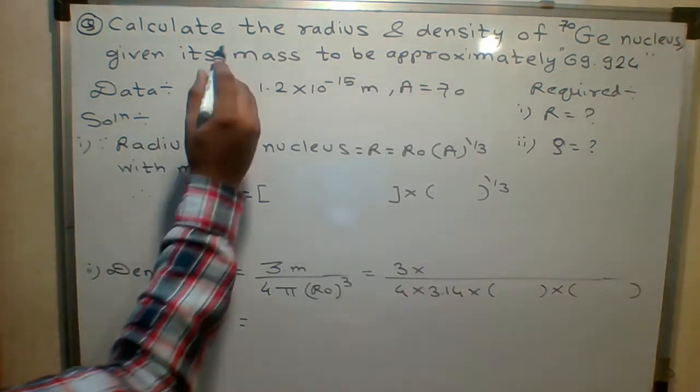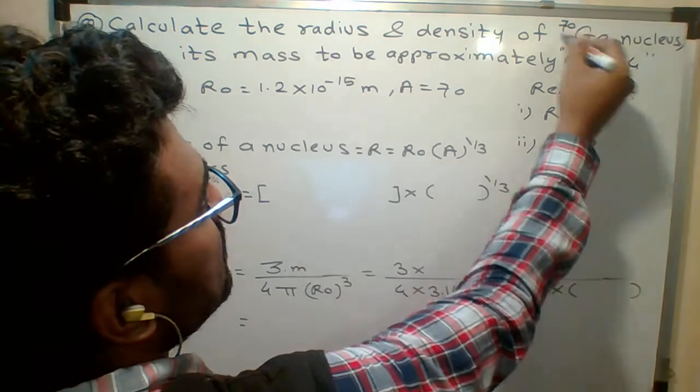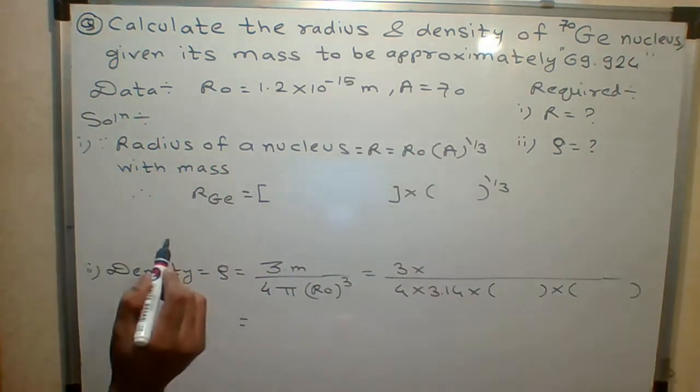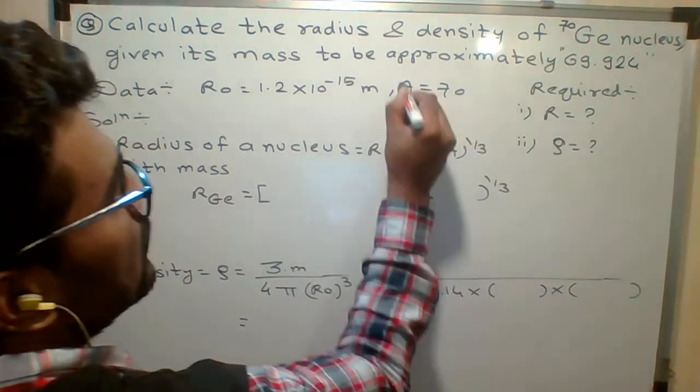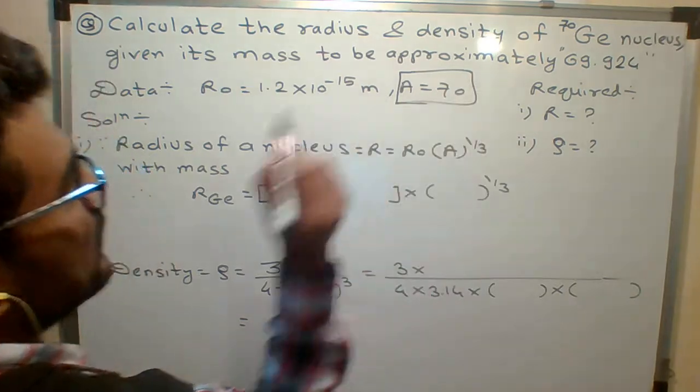The next question is to calculate the radius and density. A germanium atom is given whose atomic mass number A is 70.